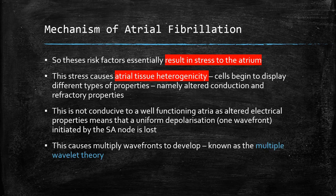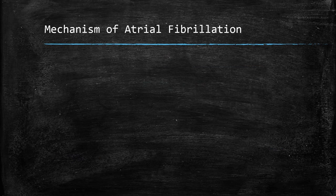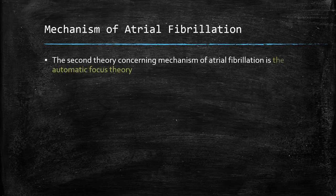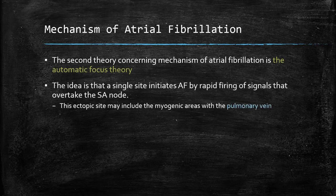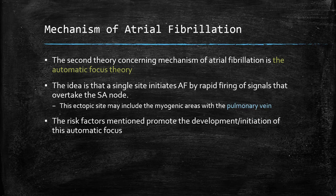This theory is known as the multiple wavelet theory. The second theory is the automatic focus theory. The idea is that a single site initiates atrial fibrillation by rapidly firing signals that overtake the SA node. The source for this focus might be myogenic areas in the pulmonary vein, where risk factors promote the development and initiation of the automatic focus.